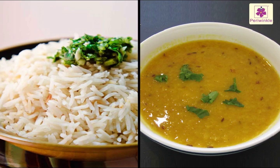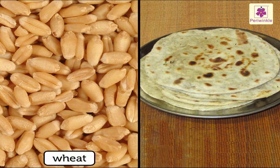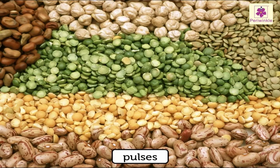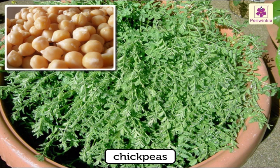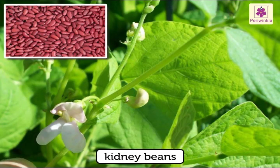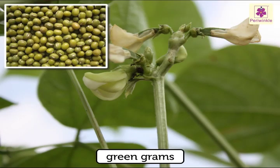We cannot eat cereals raw. Cereals are cooked into food and eaten. For example, we eat wheat in the form of chapati. We also get pulses like chickpeas, kidney beans, and green grams from plants.